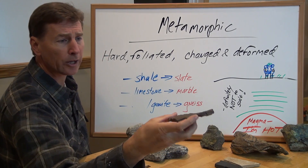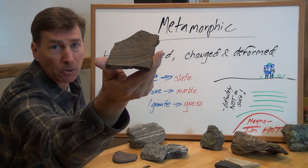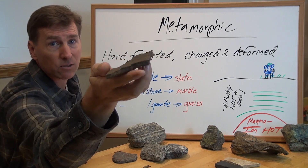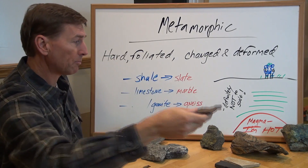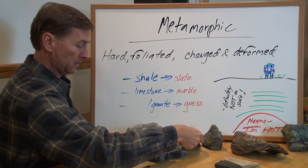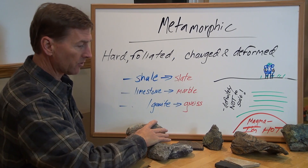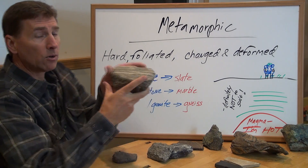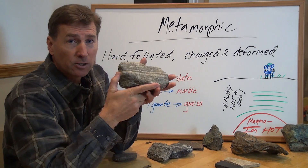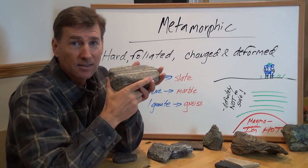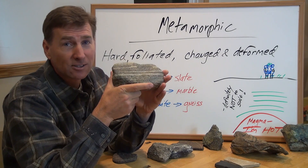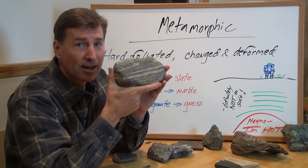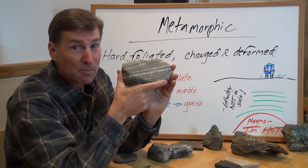Here's an old sandstone — it's got ripples in it. Ancient ripples. And we'll finish here with the dumb joke: I don't want you to take me for granite, because I'm gneiss. Get it? Granite turns to gneiss — so don't take me for granite because I'm gneiss.